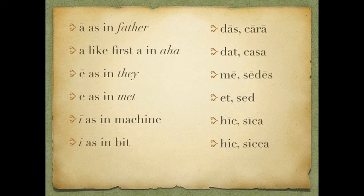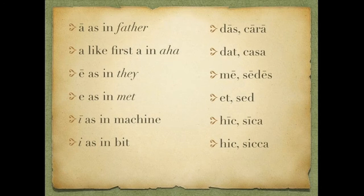Long E is the E in they — so may, sedes. Short E is like the E in met — so we would say et and sed. Long I is like the I in machine — so heek and seeka. Short I is like the I in bit — so we would have hic and seeka.